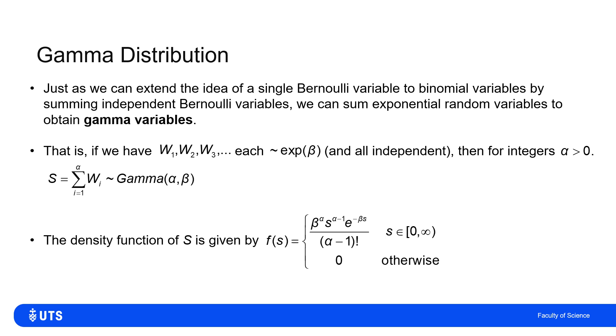So the density function of S, the gamma distribution here, is beta to the alpha, S to the alpha minus 1, e to the minus beta S divided by alpha minus 1 factorial, for S being non-negative.